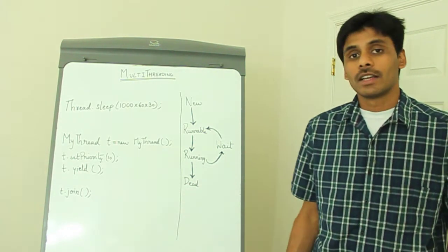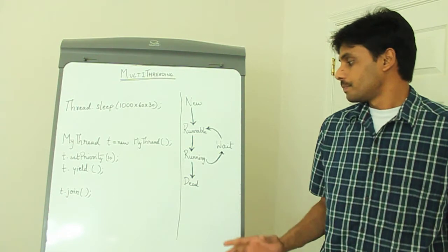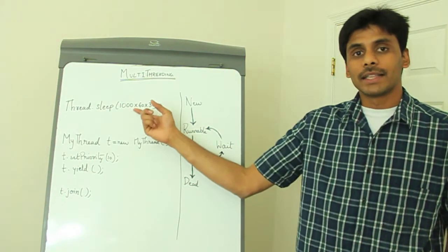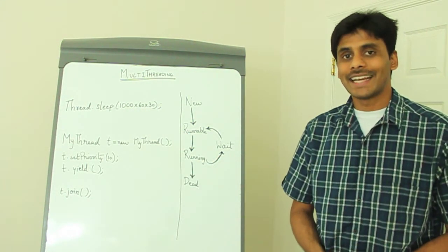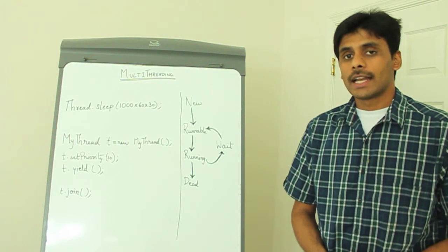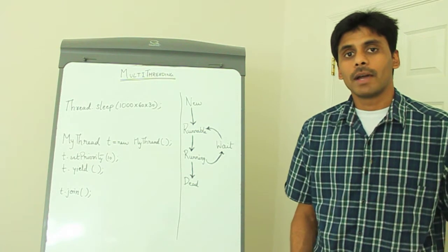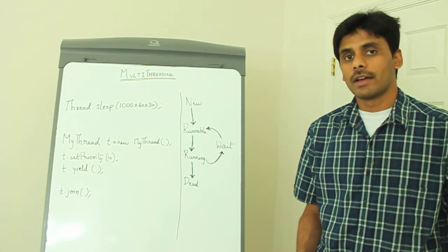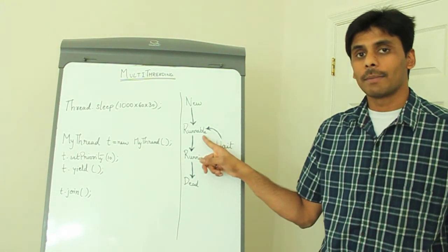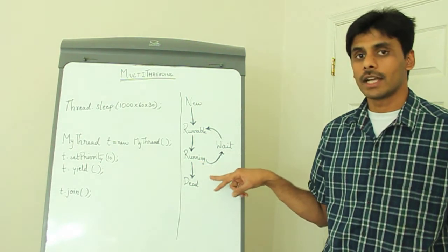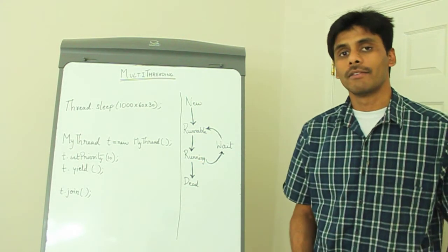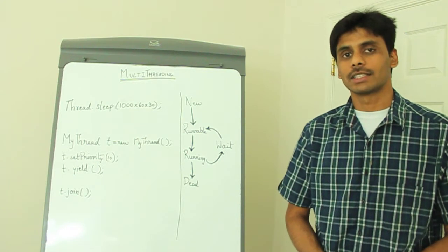To summarize, today we have learnt how to use the sleep method to put a thread to wait or a sleep state for a certain number of milliseconds that you provide. When you put the thread to sleep and when the sleep method finishes, the thread is put back to the runnable stage and not the running stage. And it's up to the thread scheduler when to move the thread back to running stage.